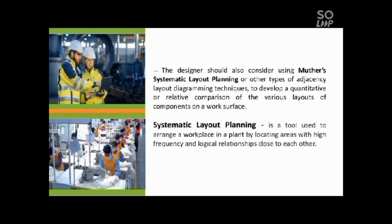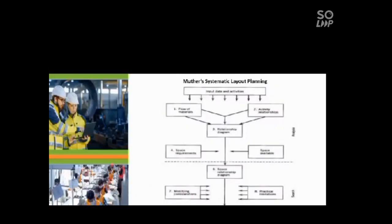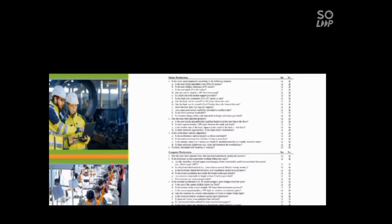Once the general location has been determined for a group of components that is the most frequently used parts for assembly, the principles of functionality and sequence of use must be considered. The sequence of use principle: components which are used in sequence should be located next to each other and layout should reflect sequence of operation. The functional grouping principle refers to the grouping of components by similar function. For example, all fasteners in one area, all gaskets and rubber components in another area. Since many products are assembled in a strict sequence, cycle after cycle, it is very important to place the components or sub-assemblies in the order that they are assembled, since this will have a very large effect on reducing wasteful motions. This figure shows a workstation utilizing gravity bins and a belt conveyor to reduce reach and move times. The conveyor in the background carries other parts past this particular workstation. The operator is feeding the conveyor from under the platform by merely dropping assembled parts onto the feeder belt. The designer should also consider using Muther's systematic layout planning or other types of adjacency layout diagramming techniques to develop a quantitative or relative comparison of the various layout components on a work surface. Systematic layout planning is a tool used to arrange a workplace in a plant by locating areas with high frequency and logical relationships close to each other. The relationships between components can be modified from traditional data on the flow from one area to another and should include visual links, eye movements, auditory links or voice communication or signals, and tactile and controlled motions. This is an example of Muther's systematic layout planning. These principles of work design for workstations are summarized in the workstation evaluation checklist. The analyst may find this useful in evaluating existing workstations or implementing new workstations.